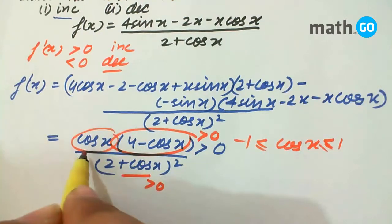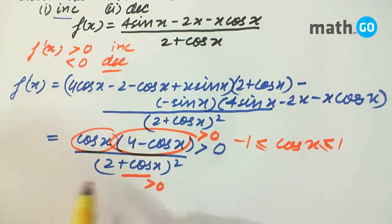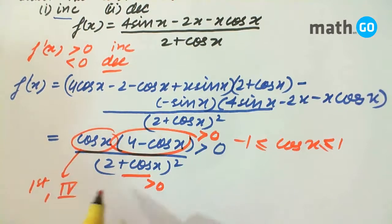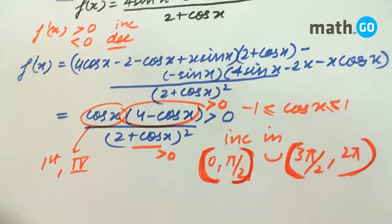So only this has to be checked. We have to find where cos x is greater than 0. In the first quadrant and fourth quadrant, cos x is greater than 0. Therefore, it is increasing in 0 to pi by 2 union 3 pi by 2 to 2 pi, and decreasing in pi by 2 to 3 pi by 2, that is the second and third quadrant.